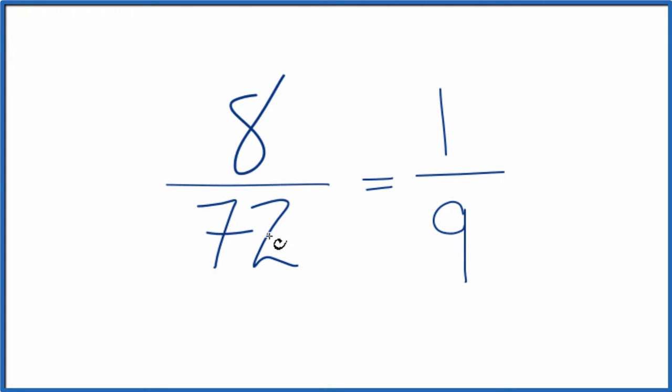The other way you could do this, you have two even numbers, so we could just divide them by 2. 8 divided by 2 is 4. 72 divided by 2, that's 36. So we have 4/36.